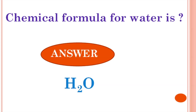Chemical formula for water is H₂O. Water is a transparent fluid which forms the world's streams, lakes, oceans and rain, and is the major component of the fluid of organisms. A water molecule contains one oxygen and two hydrogen atoms.